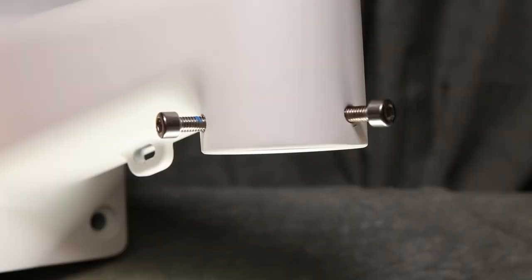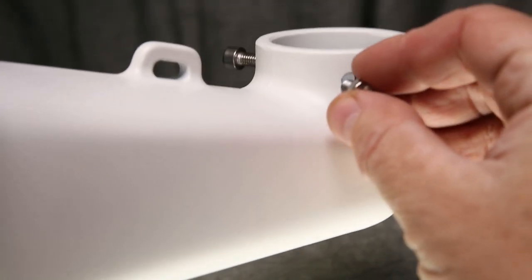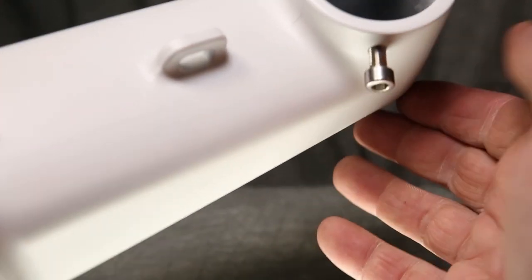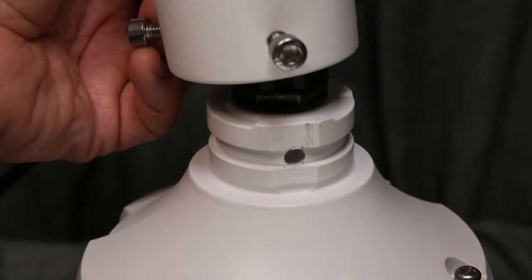It's also advisable to partially thread the three allen bolts onto the neck of the mount. Make sure not to have the bolts extend too far into the hole. If they extend too far, they can get in the way of the camera pendant socket during the install.